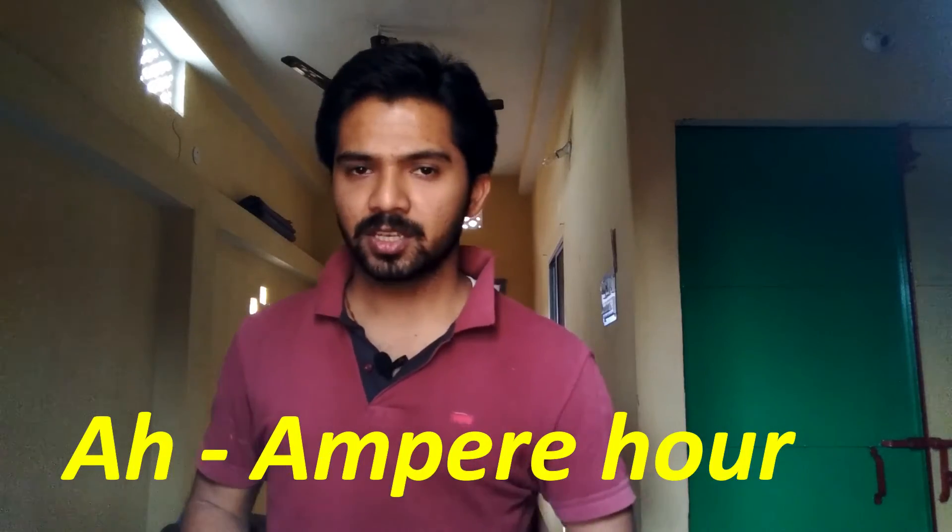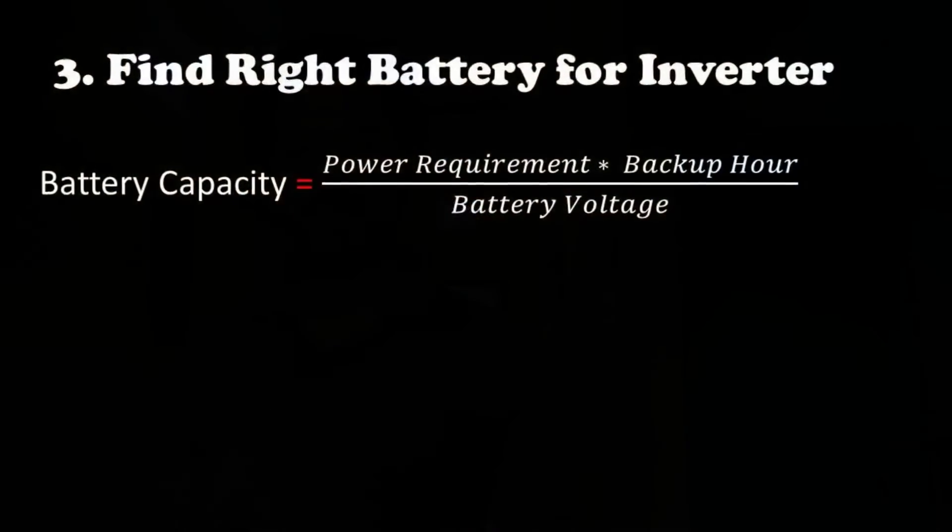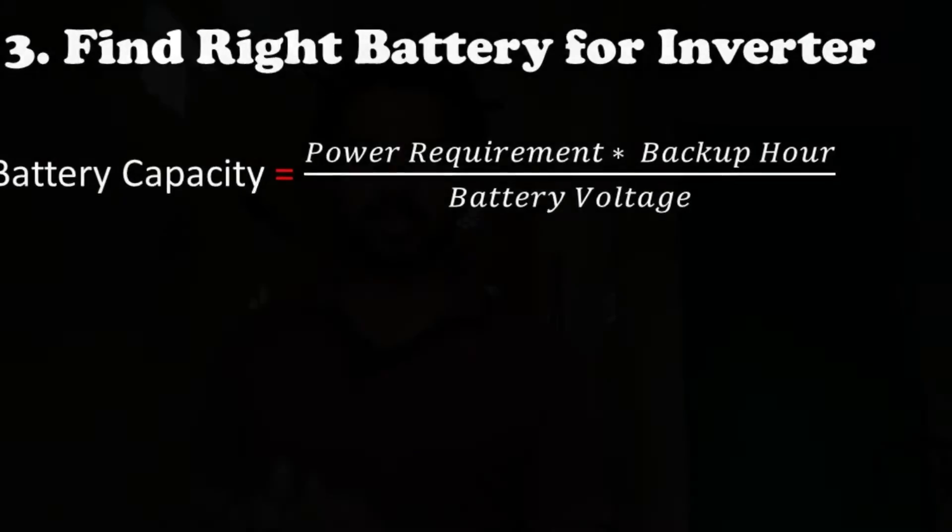Now let's start with the third step in which we have to find the right powered battery for our inverter. The power of a battery is also known as battery capacity, which is represented in ampere-hours (AH). To find battery capacity, we have a formula: battery capacity equals power requirement multiplied by backup hours, divided by battery voltage. We calculated the power requirement in the first step. For backup hours, consider the time you want your battery to provide backup during power failure — 1, 2, 3, or 4 hours. I consider 3 hours of battery backup. Battery voltage is always constant at 12 volts.